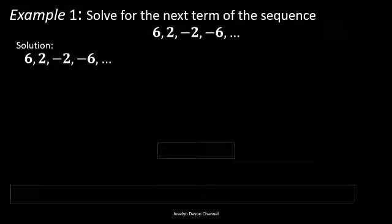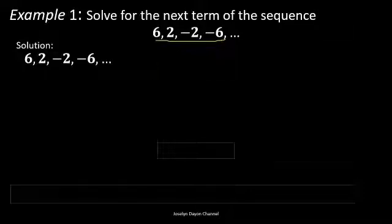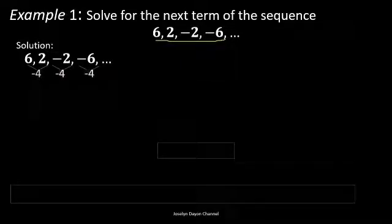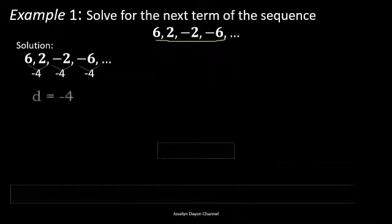Let's have the first example: solve for the next term of the sequence 6, 2, negative 2, negative 6, and so on. We are asked to determine the next term. We already have the fourth term, so we are going to solve for the fifth term. First, we have to solve for the common difference, which is equal to negative 4.